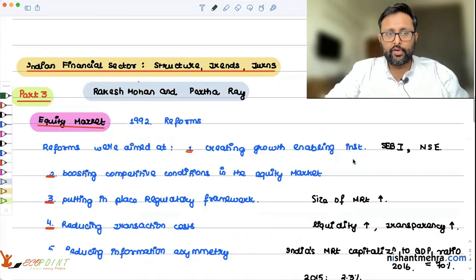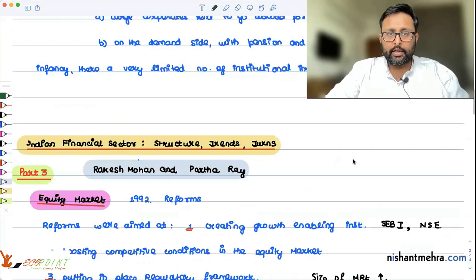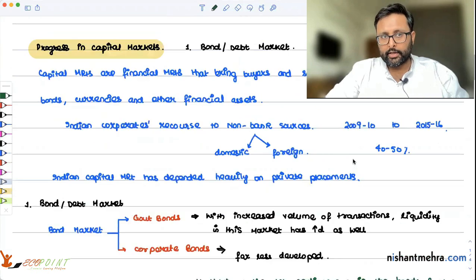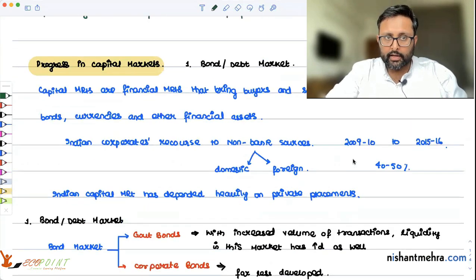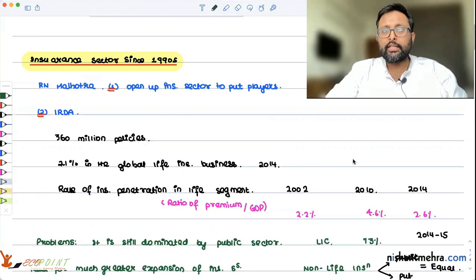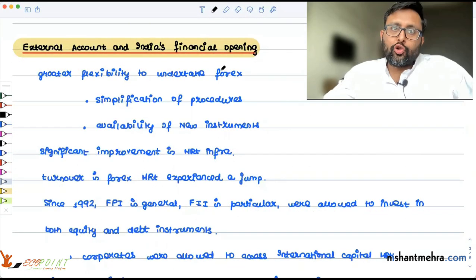These are the four segments of the capital market: pension funds, mutual funds, equity market and the bond or debt market. We have seen the capital market and we have also seen the insurance sector. Now let us talk about the last two segments of the financial markets.